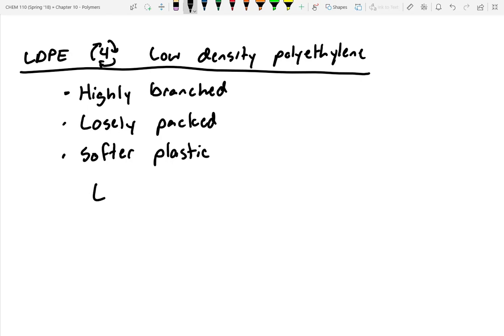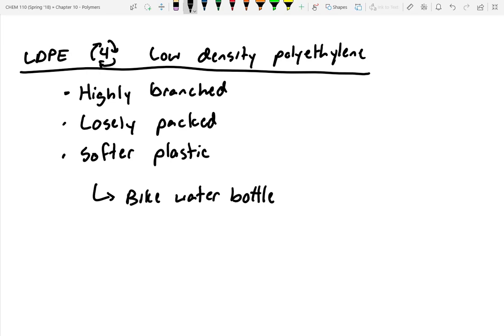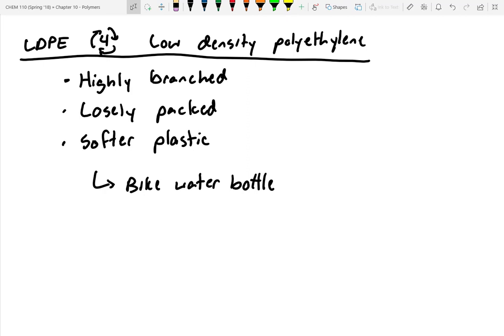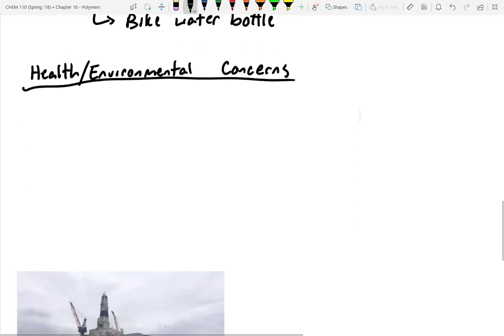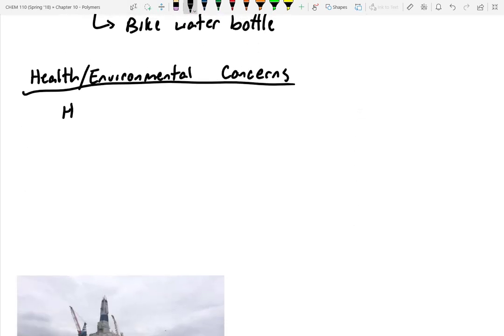A good example of this would be something like a bike water bottle. So you know the standard bike water bottles or athletic water bottles, they're easy to squeeze and squirt water out of. That's low density polyethylene. So they have different uses and purposes, but they're both produced in a huge amount. There are some environmental and health concerns with plastics. I wanted to briefly talk about those.